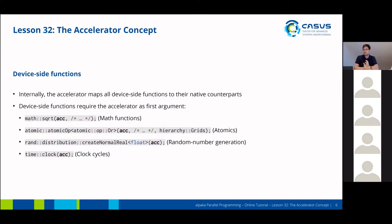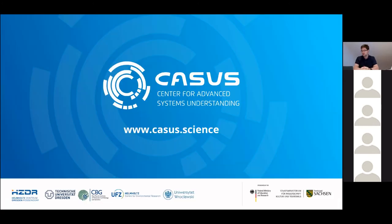Internally, the accelerator maps all device-side functions to their native counterparts. Some other device-side functions also require the accelerator as their first argument — this is true for math functions as we've seen yesterday, and for atomic operations. For atomics, you provide the accelerator, the parameters you want to work on, and a hierarchy, so you can define if your atomic should work on the entire grid, just inside the block, or the threads. For some backends there is also random number generation, which is a device-specific function callable inside the kernel. Additionally, there is a rudimentary function to measure time which gives back the clock cycles as a way to measure time inside the kernel.